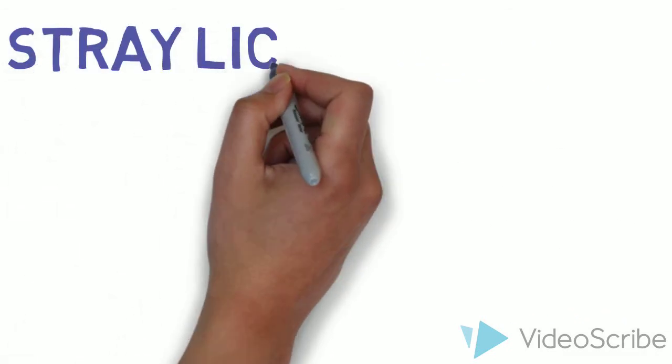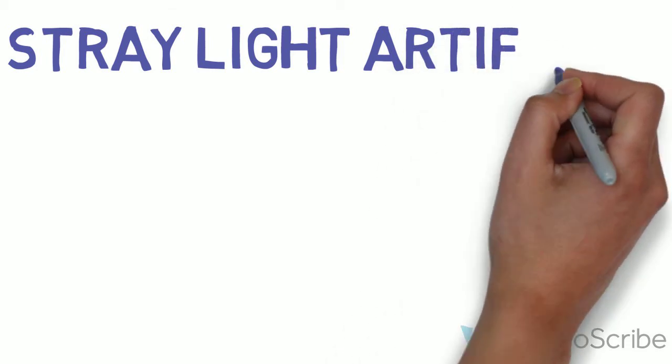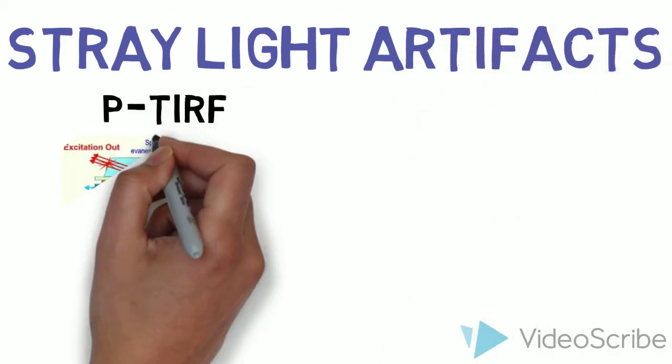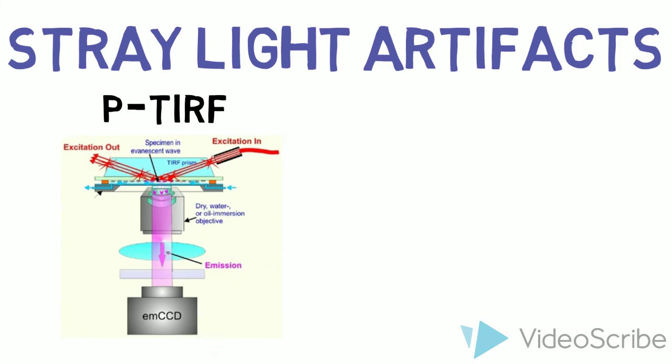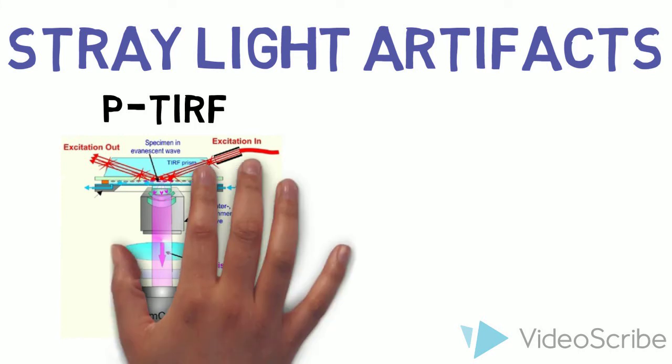To get really nice nanoscale images, one wants to minimize any stray or scattered light that might cause artifacts in detection. In this category, P-TIRF is the preferred geometry.